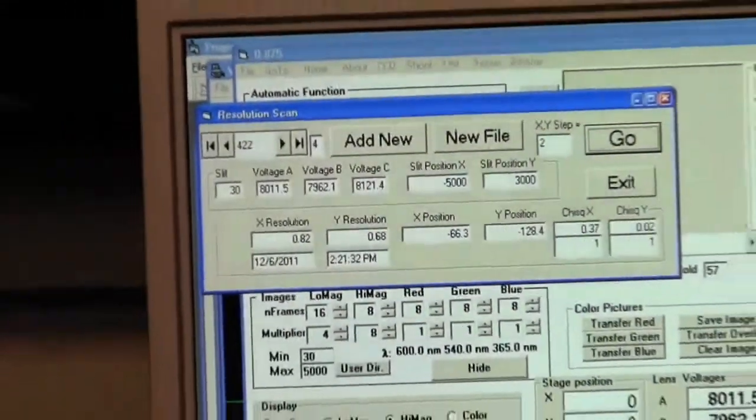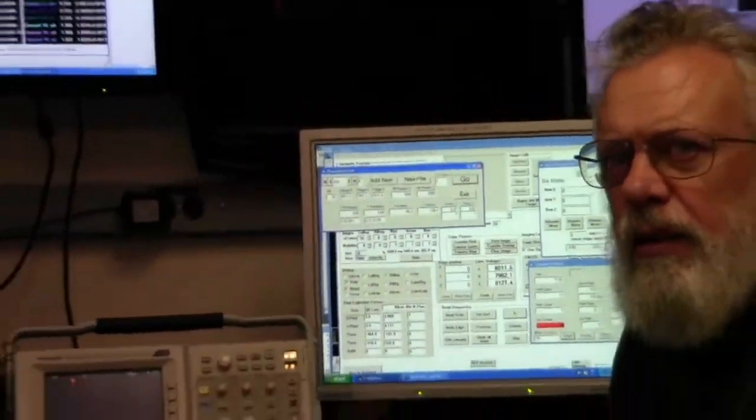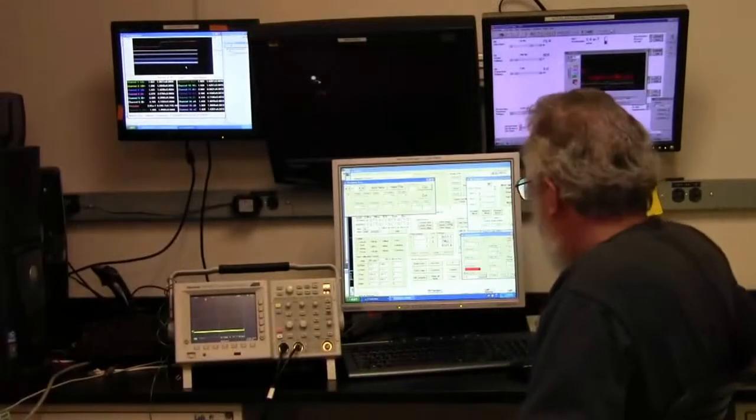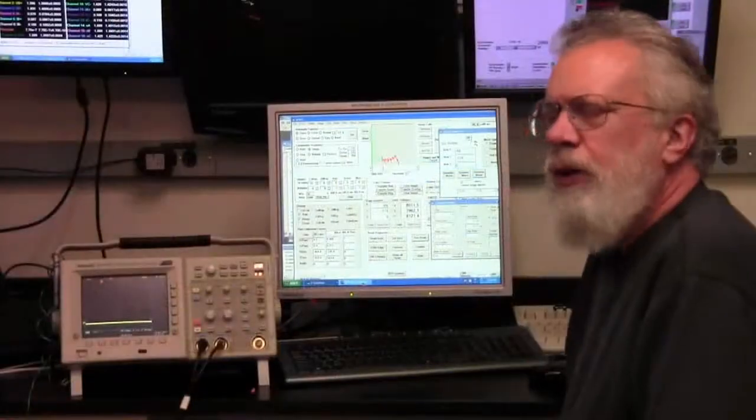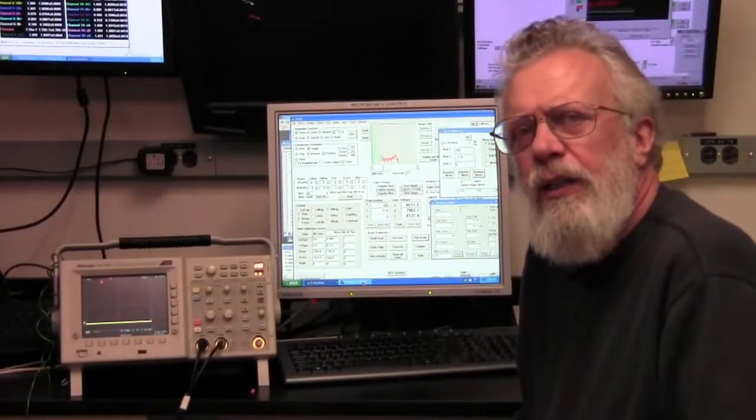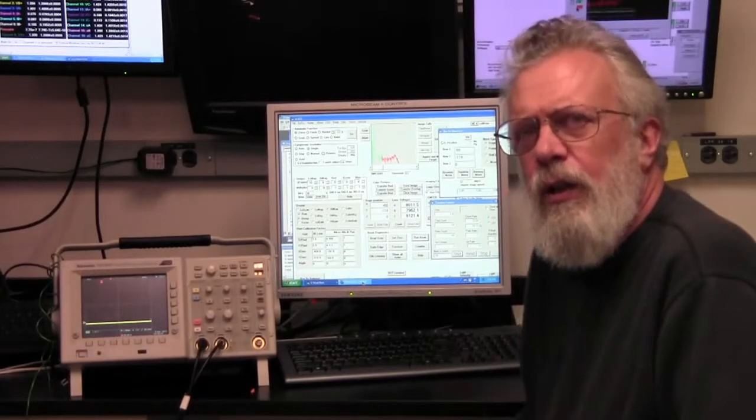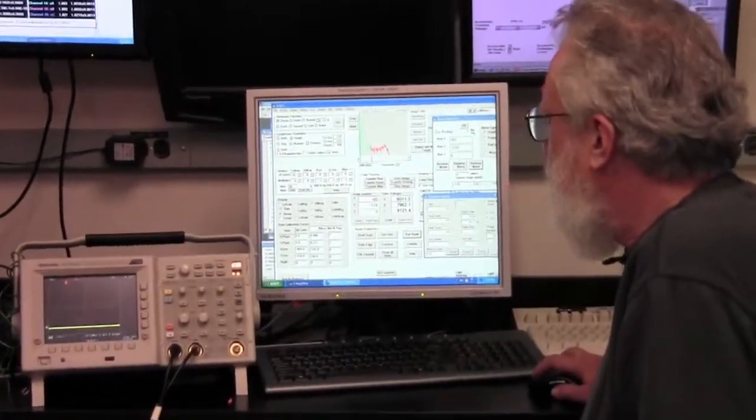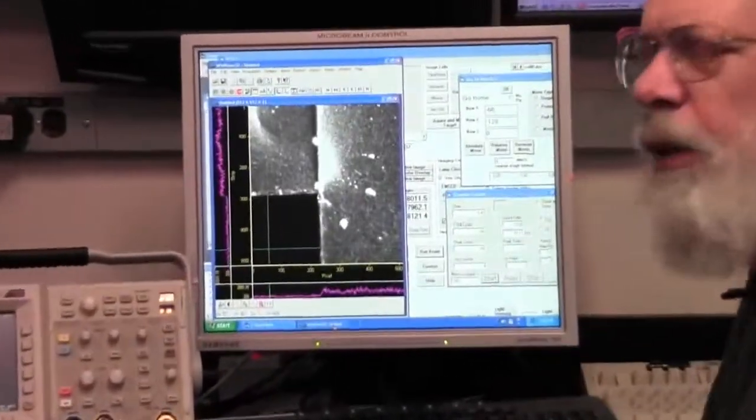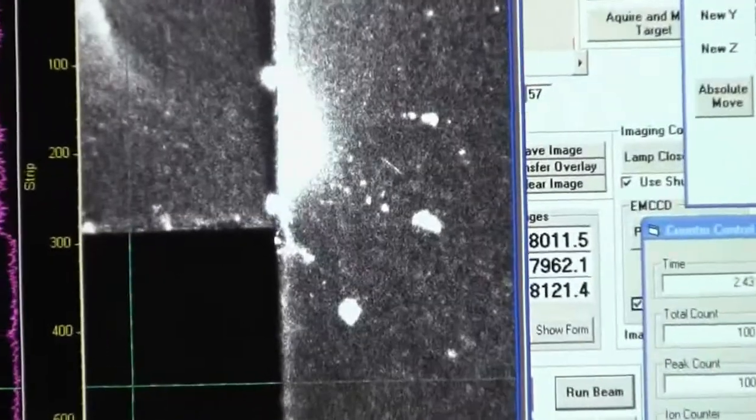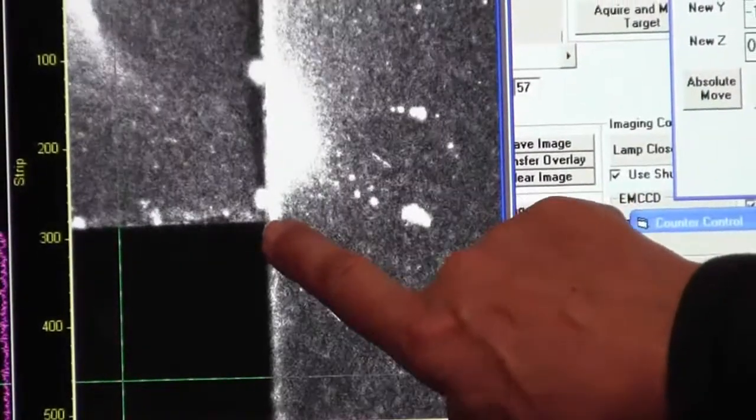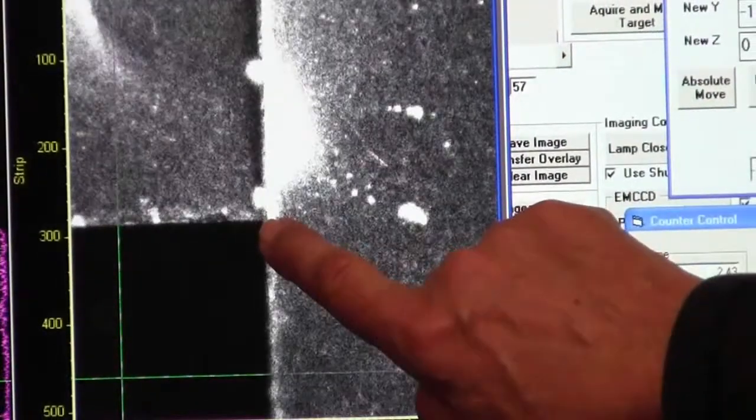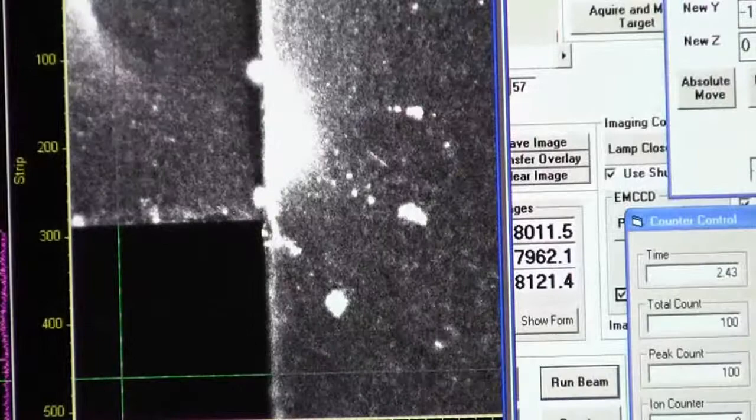So now we're going to move the knife edge to that position that it takes us to be zero. So now we've positioned the knife edge at the location of the beam and we have the microscope looking at it and here is the image that we see in the microscope.